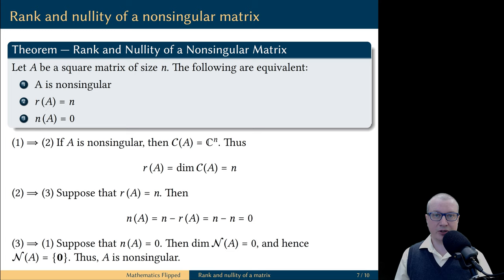the vector space which contains only the zero vector. Therefore, we conclude that the null space of the matrix A includes only the zero vector, and this is enough for us to conclude that A must be a non-singular matrix.